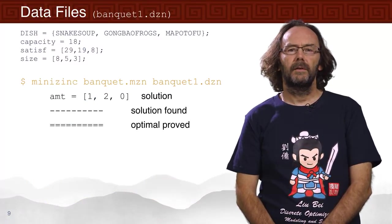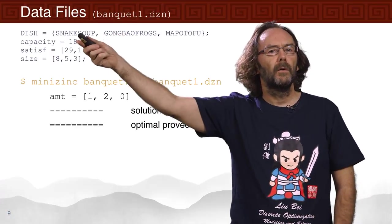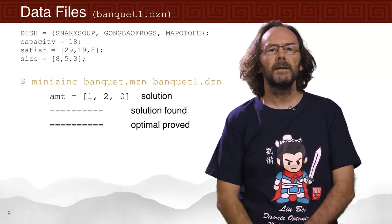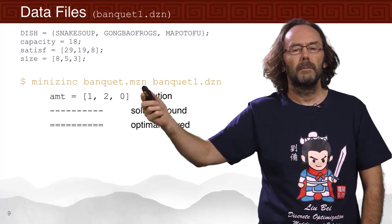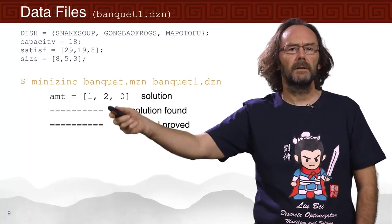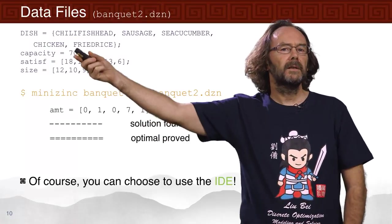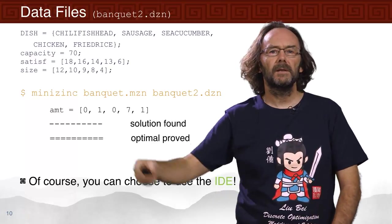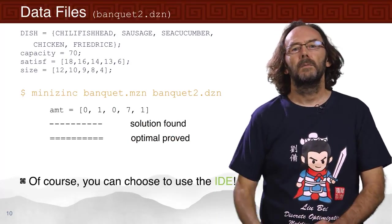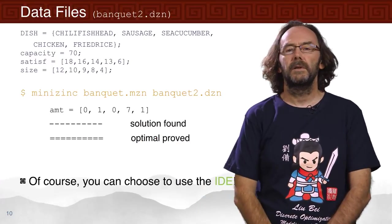Now we can run our model with the two different data files for the two different problems. Here's the data file for the heroes' table: the three dishes, the capacity of the table, the satisfaction of each dish, and the size. We run this by calling MiniZinc with the model and the data file banquet1.dzn, and we'll get back the solution showing how much they should put on the table. Then we can run it with the different data file for the army, with five different dishes, capacities, satisfaction amounts, and sizes, by just specifying a different data file on the command line to MiniZinc.